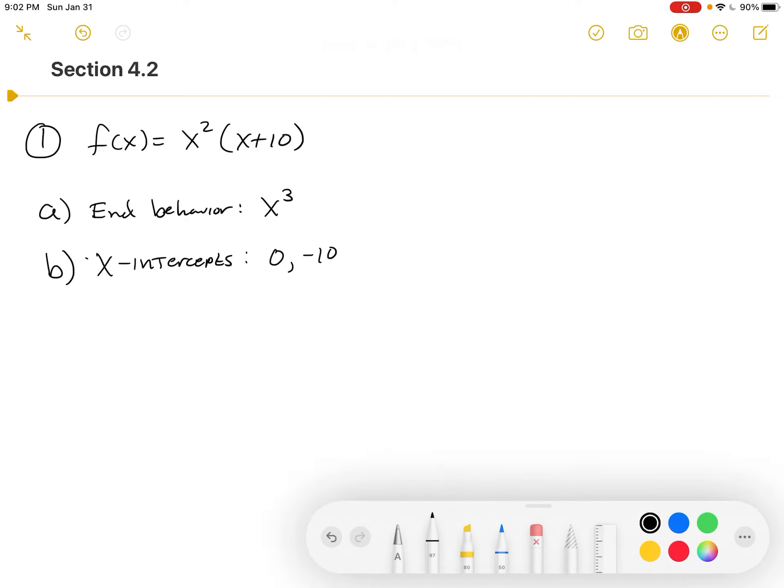Again, if the book's asking me or if the homework's asking me to put that in ascending order, then I'm going to make sure I type in the negative 10 first, followed by the zero, not putting them in in the order that I see them. C, y-intercept.